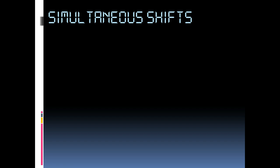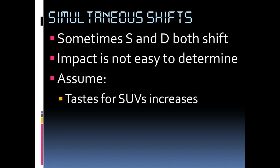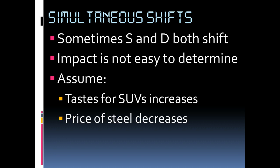When looking at a single shift of either supply or demand, the outcome is very clear — we can say for certain how price and quantity will change. But when both supply and demand are shifting simultaneously, we have more difficulty determining the effect on equilibrium price and quantity. For example, let's say preferences for SUVs increase — a right shift in demand — and the price of steel decreases. Since steel is a major component of SUV production, supply of SUVs would also increase.